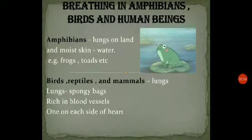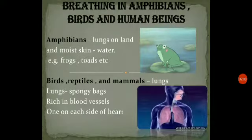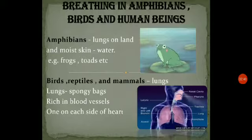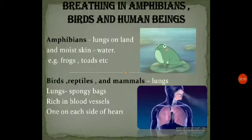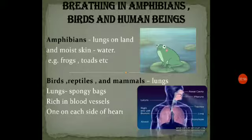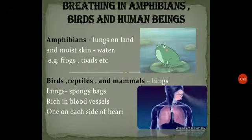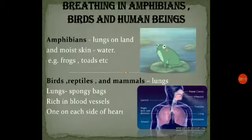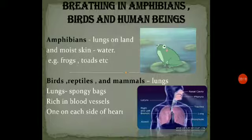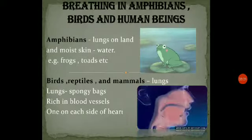Birds, reptiles, and mammals use lungs for breathing. Lungs are spongy bags, one on each side of the heart. When air rich in oxygen enters the lungs, blood present in the blood vessels of the lungs absorbs oxygen and releases carbon dioxide. And carbon dioxide-rich air comes out of the nose.